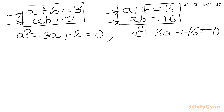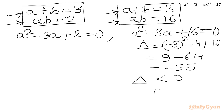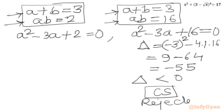Checking the discriminant of the second quadratic: Δ equals b² minus 4ac equals (minus 3)² minus 4 times 1 times 16 equals 9 minus 64 equals negative 55. The discriminant is negative, so we get complex solutions. We reject this quadratic since we are looking for real solutions only.